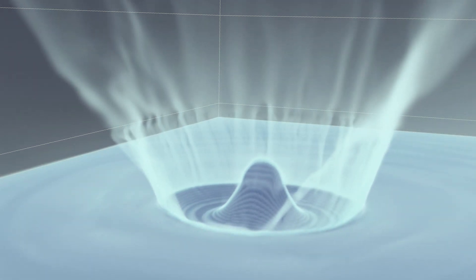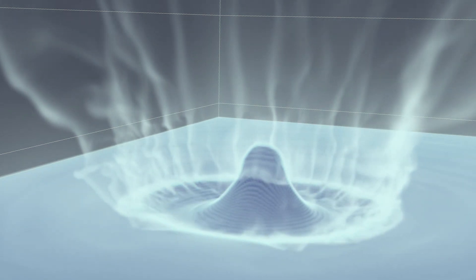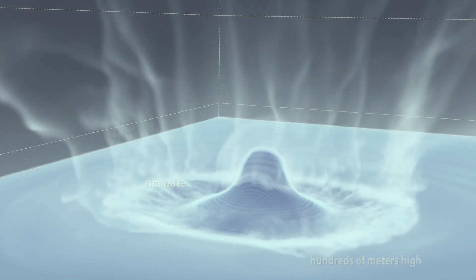Water rushes into the crater, forming a water jet which can be several kilometers high. This jet collapses to form a rim wave, which is hundreds of meters high.